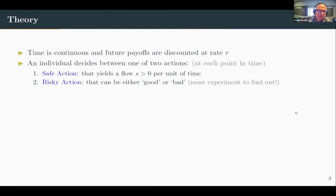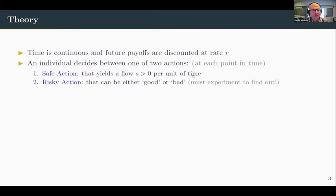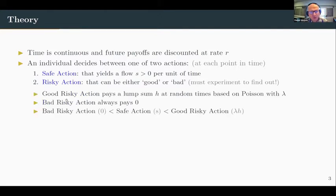Diving into the theory: time is continuous and has future payoffs discounted at rate r. At each point in time the individual needs to decide between a safe action and a risky action. The safe action always yields payoff S, whereas the risky action can either be good or bad, and the agent must experiment with the risky action to find out which state it actually is. A good risky action pays out a lump sum H at random times, otherwise it pays nothing. The bad risky action always pays out zero.